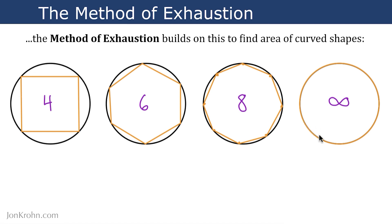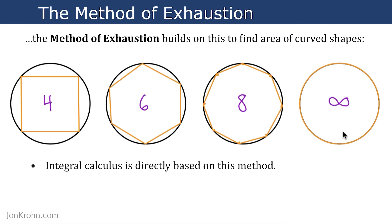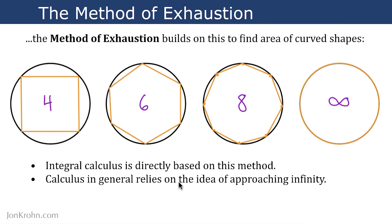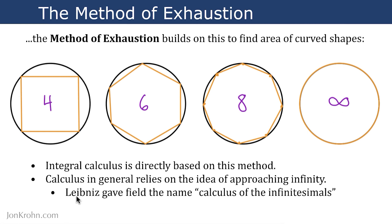A polygon with a theoretical infinite number of sides corresponds exactly to the area of a circle. Integral calculus is directly based on this method, and calculus in general relies upon the idea of approaching infinity like this. Leibniz, when he coined this field, gave it the name 'the calculus of the infinitesimals.' In the next video, we'll apply this same concept to the differential branch of calculus rather than the integral branch.